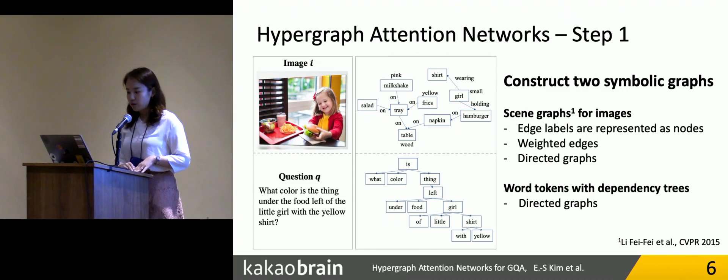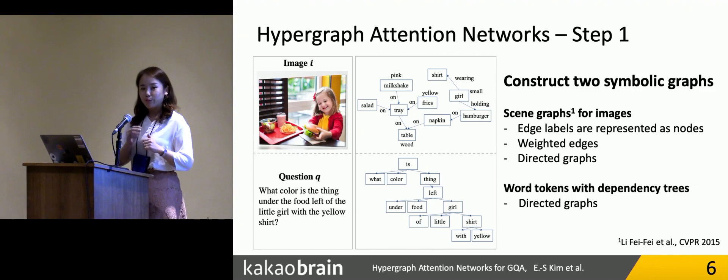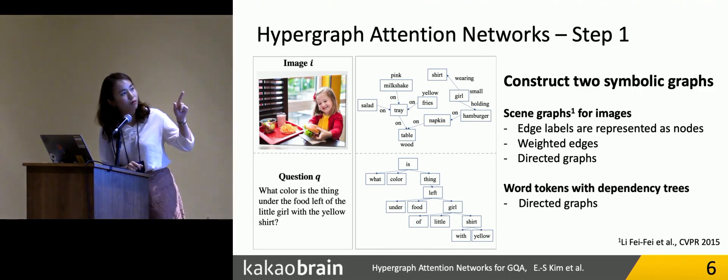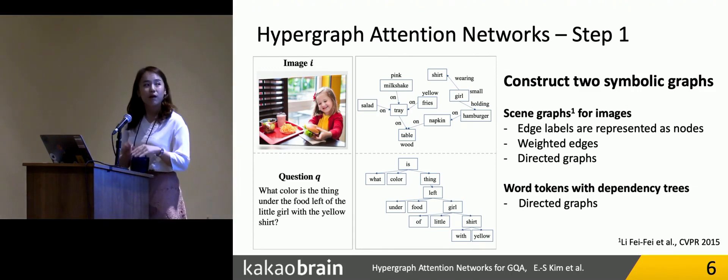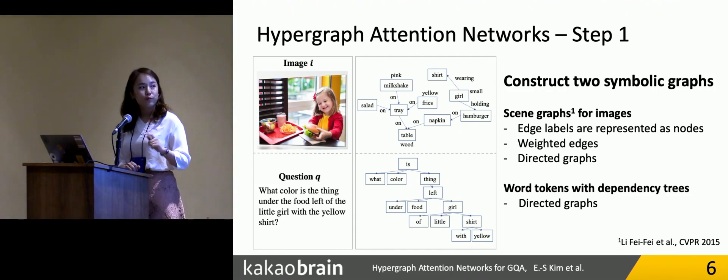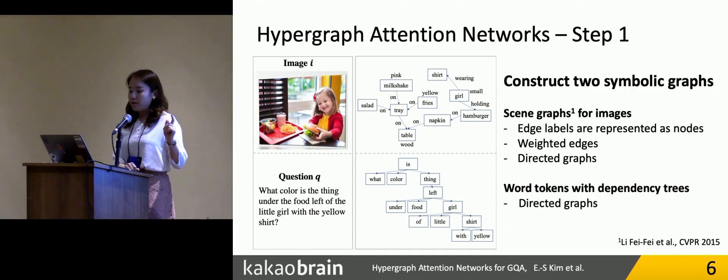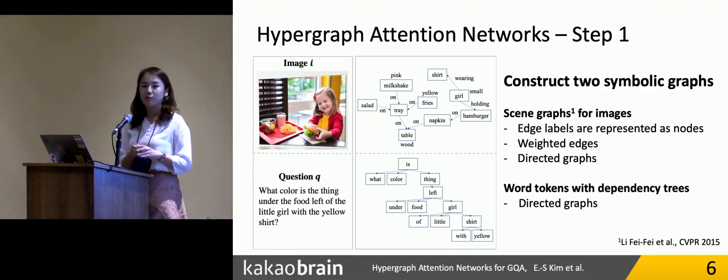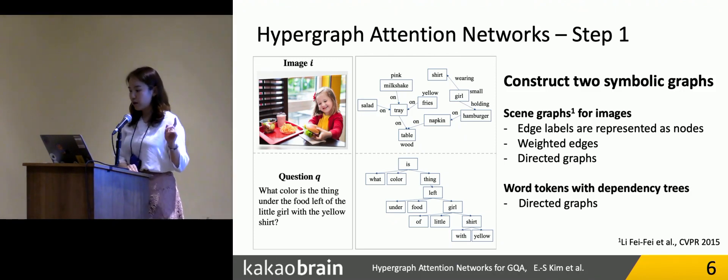One interesting thing I should note here is we use the flattened symbolic graphs, which means that the edge labels and the attribute labels of these graphs are represented as just nodes. There are words like on, or out, pink, yellow labels, but those words are represented as nodes. The reason we use the flattened scene graph is to make the same structure with the dependency tree, because there are no edge labels and attribute labels in dependency tree. We want to make the same graph structure between scene graphs and dependency parse tree.